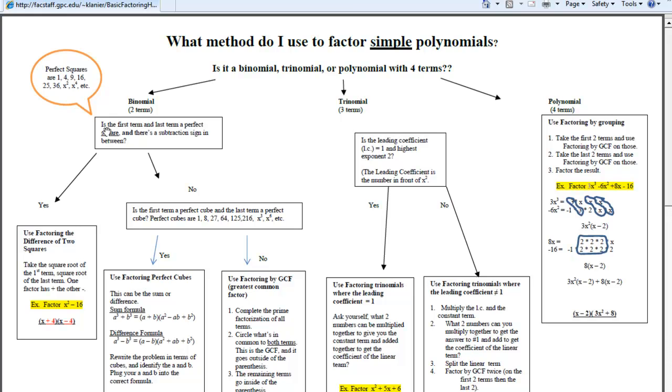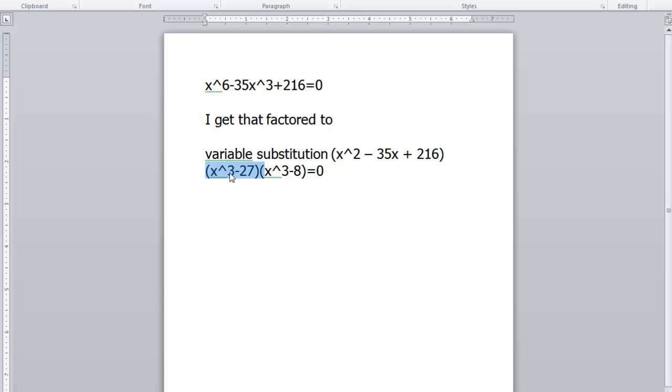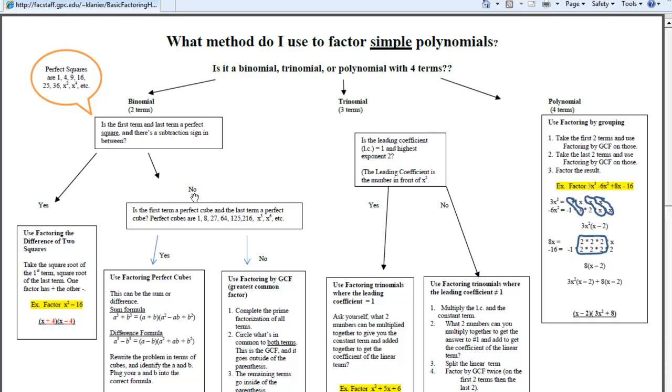So the first question that you ask yourself after that is, is the first term and last term a perfect square? So here are examples of perfect squares. If we look at our example, you have x cubed. That's not a perfect square. So the answer to that question is no.